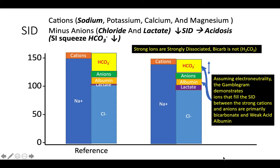On the left side of the Gamble gram we have the cations, mainly sodium, and on the right we have anions: chloride, bicarbonate, albumin, and lactates. Assuming electroneutrality, the Gamble gram demonstrates that the ions filling the strong ion difference between strong cations and anions are primarily bicarbonates and weak acids like albumin. These can be affected by the strong ion difference.